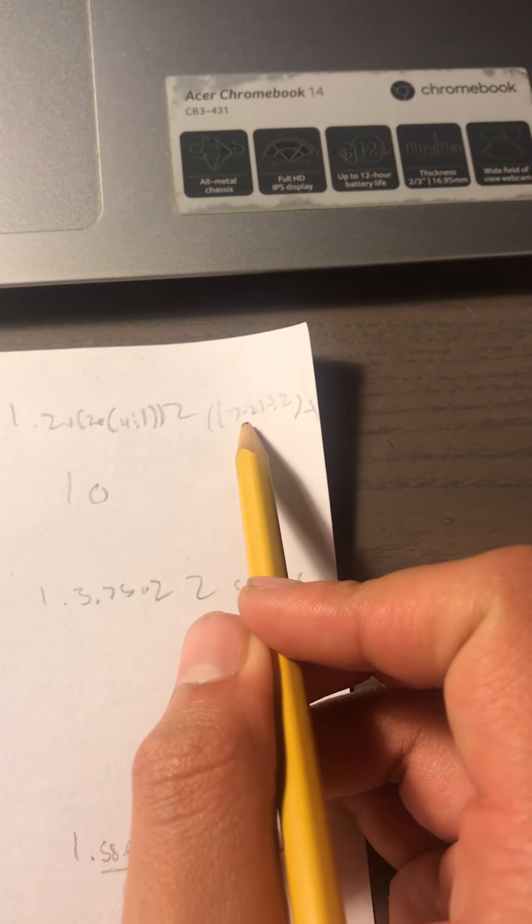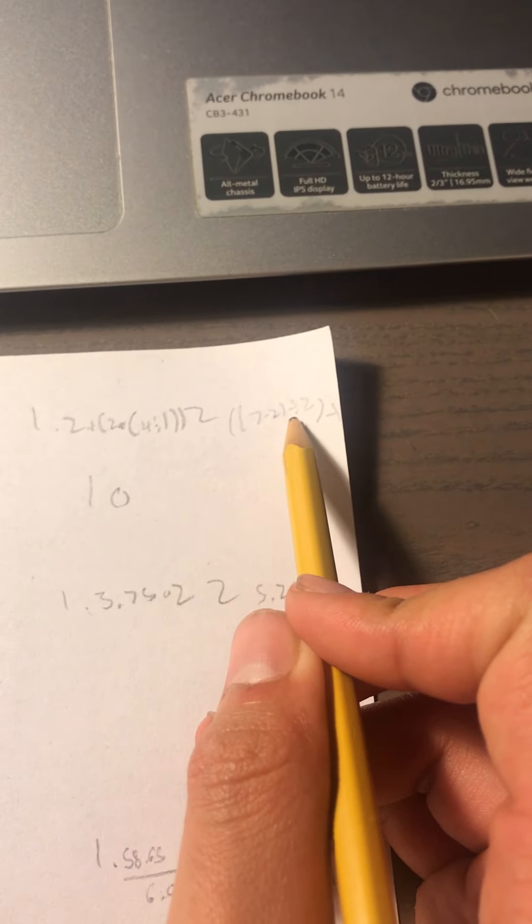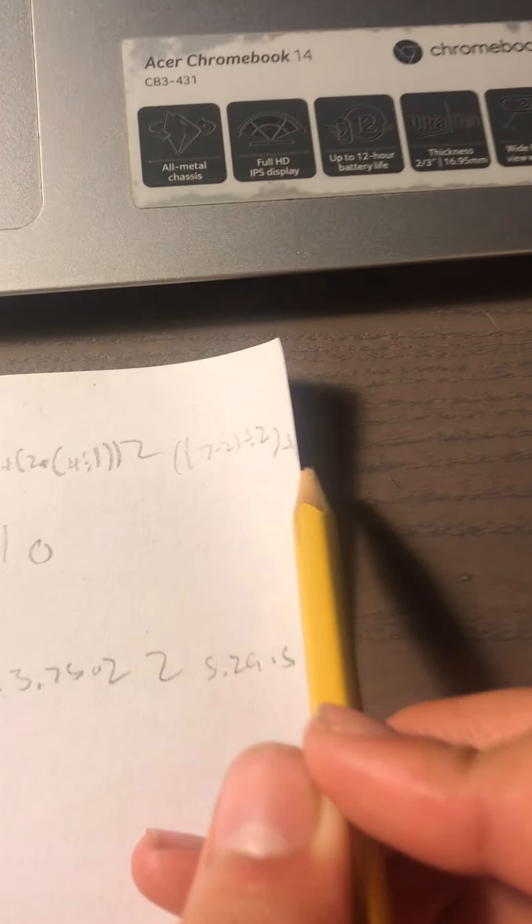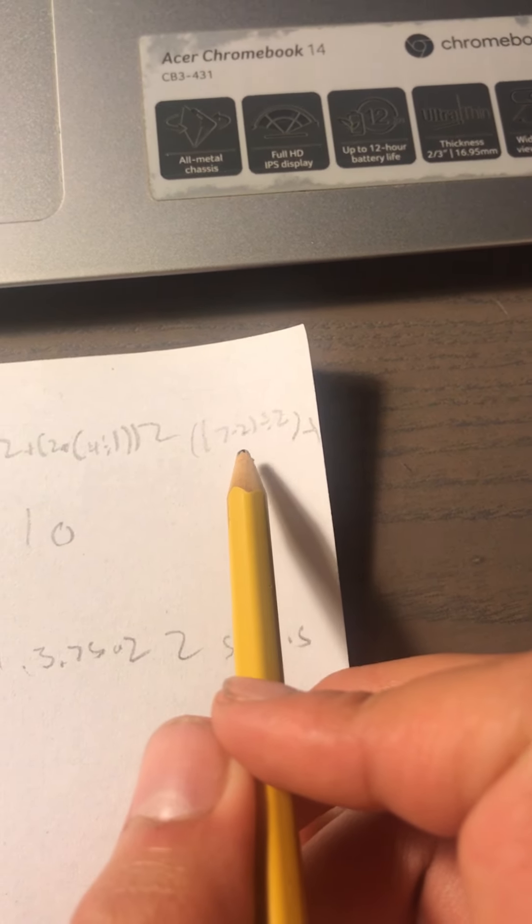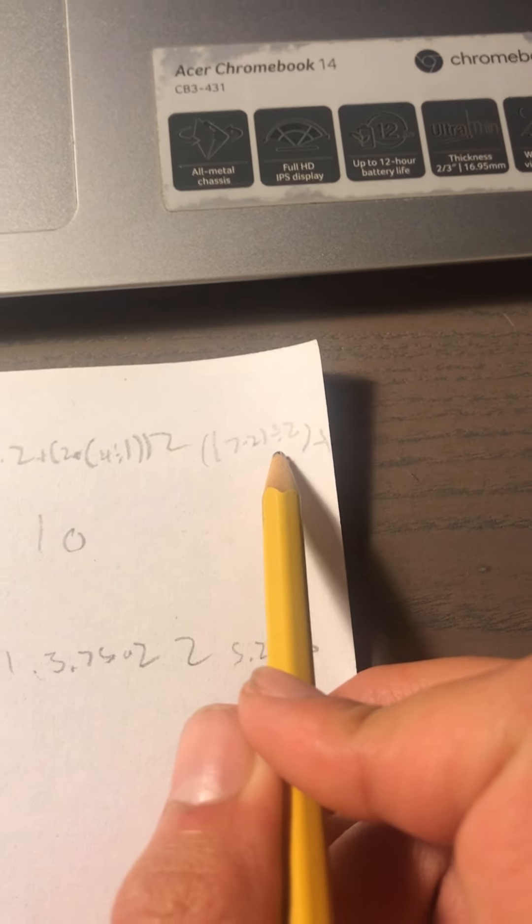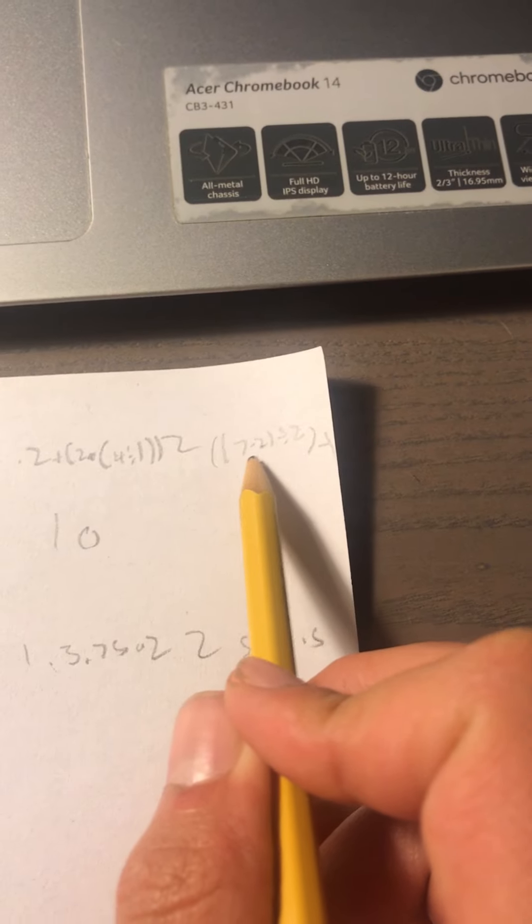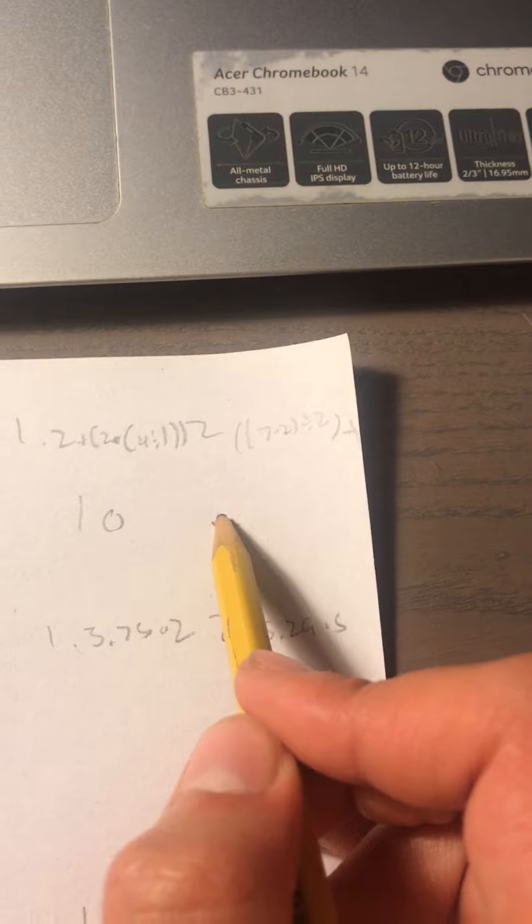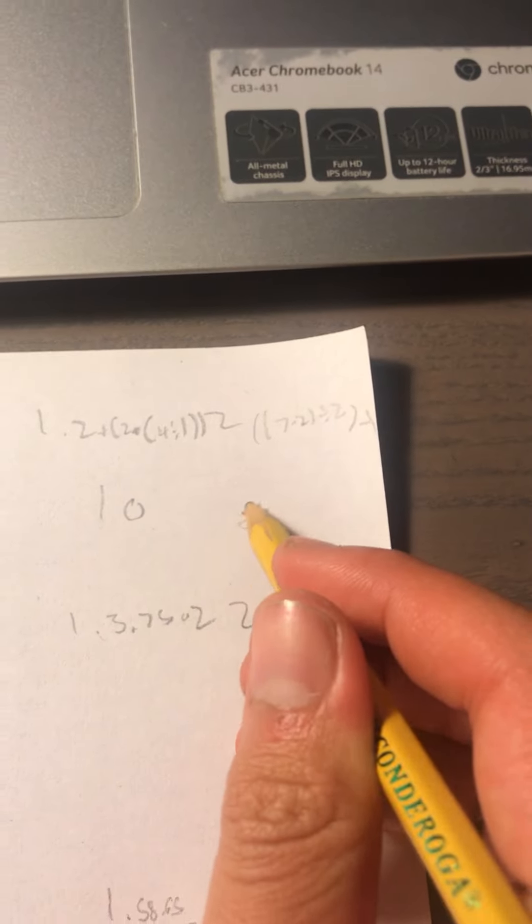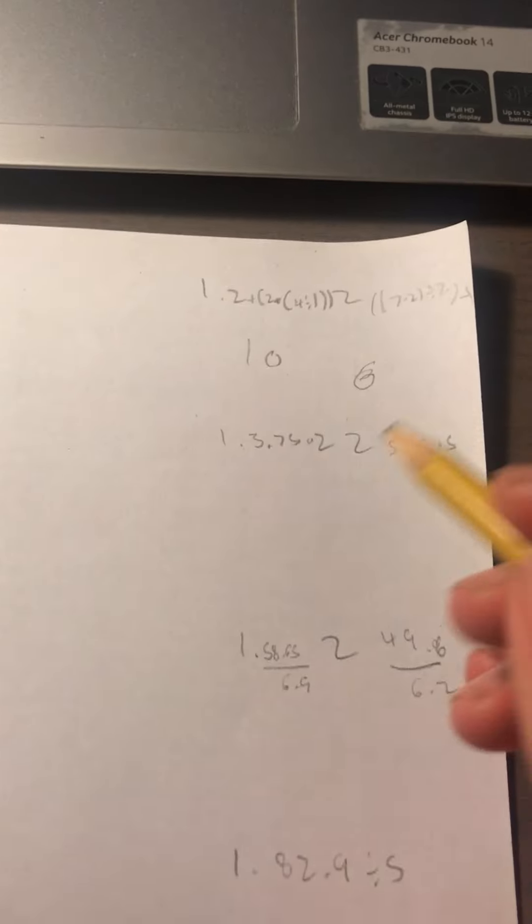And for that one that is 7 times 2, 14 divided by 2 is 7, minus 1. So that is 5, no, 14 divided by 2, so just 7, that is 6, minus 1 is 6. Sorry for being a little bit confused guys.